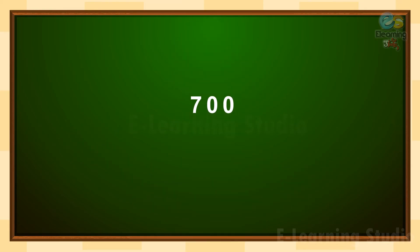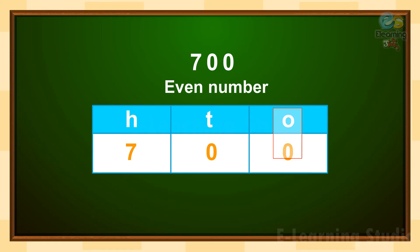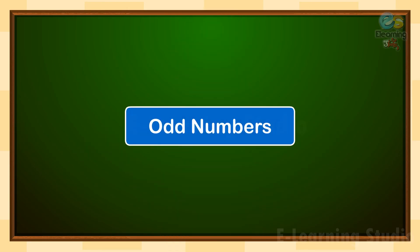Let's take another example. In the number 700, can you tell me — is it an even number or not? Yes, it is an even number! How is this an even number? Because its ones place digit is 0, and according to our rule, if the ones place digit is 0, 2, 4, 6, or 8, then it is an even number.